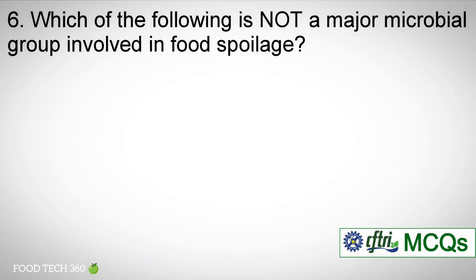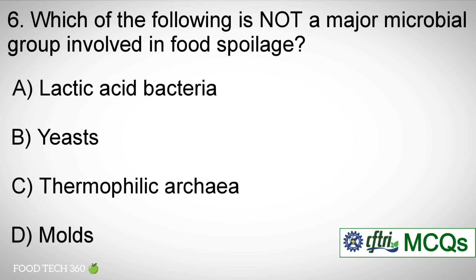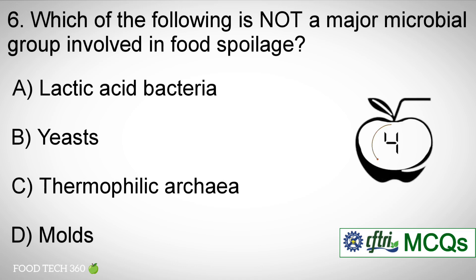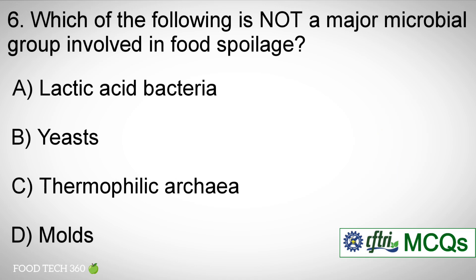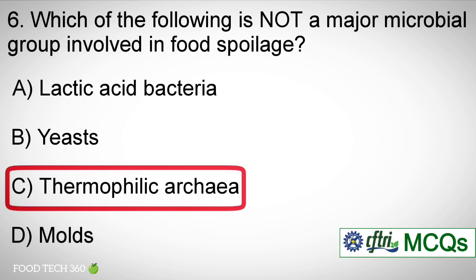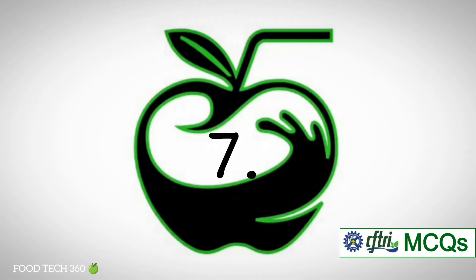Question number 6. Which of the following is not a major microbiological group involved in food spoilage? Options: A. Lactic acid bacteria, B. Yeast, C. Thermophilic archaea, D. Molds. Correct answer: C. Thermophilic archaea.